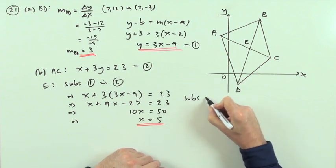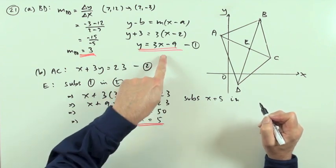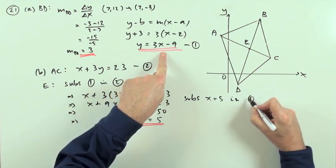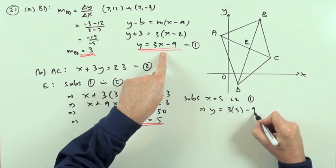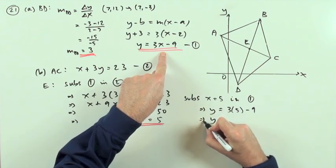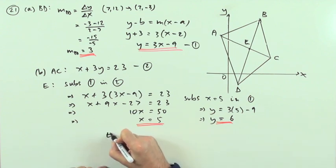Well, substitute x = 5 in whichever one is more suitable. This one says y directly so I'll use number 1. So number 1 says y = 3 times the 5 minus 9. That's 15 take away 9 which is 6. So I've got that, E is the point (5, 6).